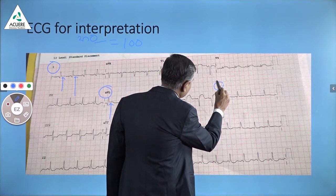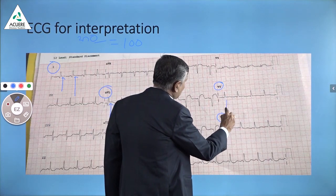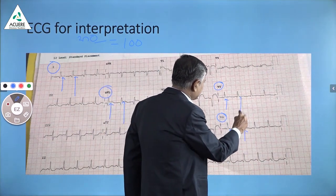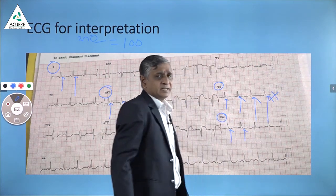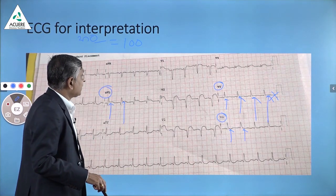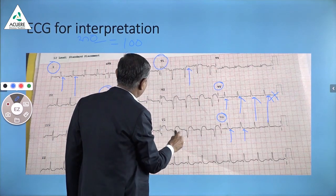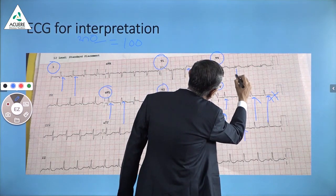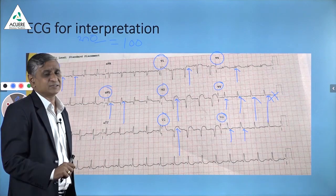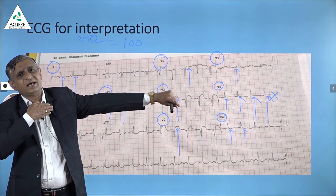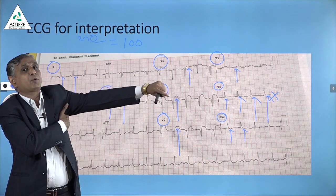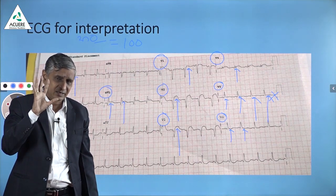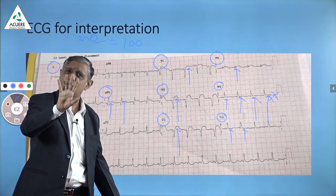One must also check V4, V5, and V6. In V5 and V6, there is not much ST elevation — in V6 it is not present, and in V5 it is questionable. So ST elevation is seen only in lead one and AVL. However, in V1, V2, V3, you can see ST elevation very clearly, and in V4 it is there but not so marked. The upper lateral portion of the heart is affected, but not the lower lateral portion represented by V5 and V6.